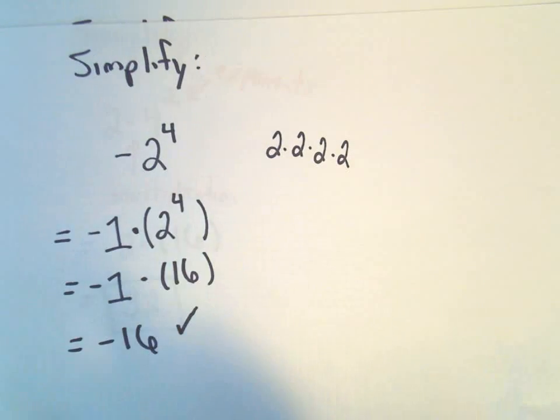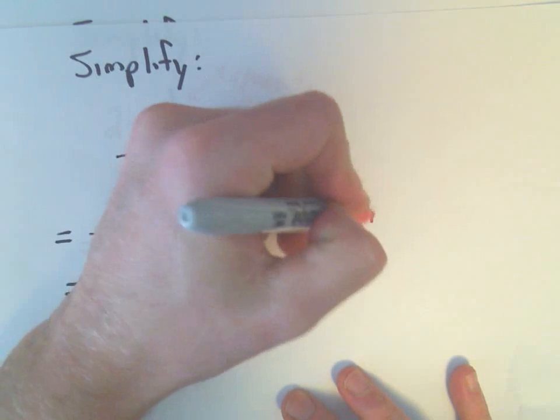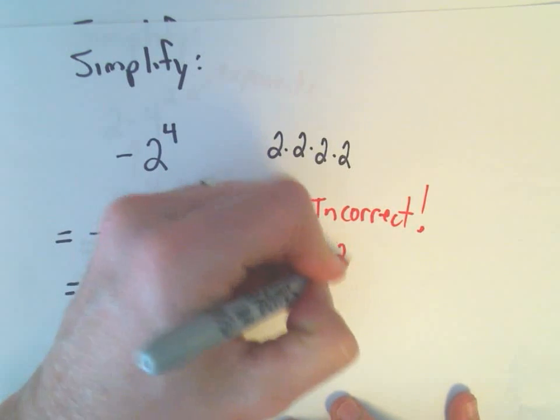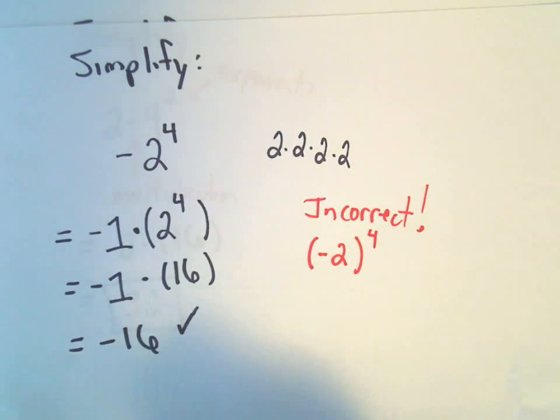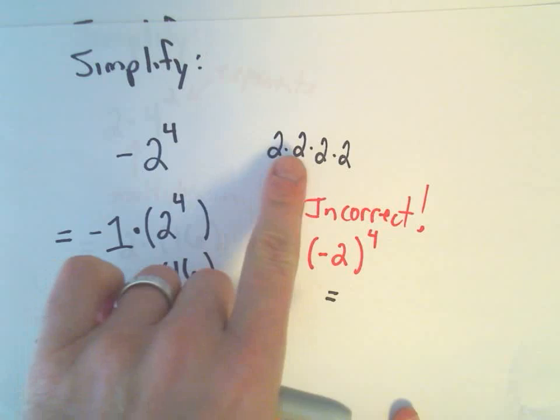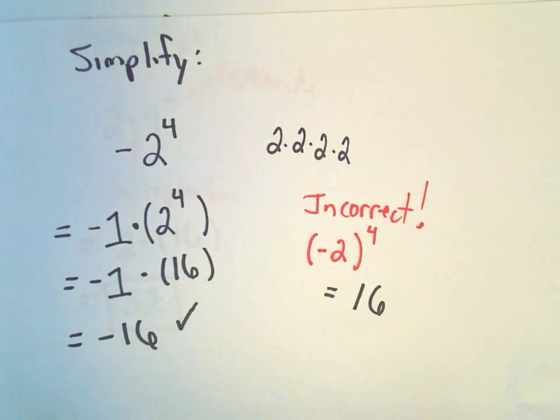What a lot of people will do, again, incorrectly, so be careful about this. What's incorrect is a lot of people will say, they'll kind of do this in their head. They'll actually do negative 2 all raised to the 4th power. And notice then you would have negative 2 times negative 2 times negative 2 times negative 2, but that would give you positive 16.